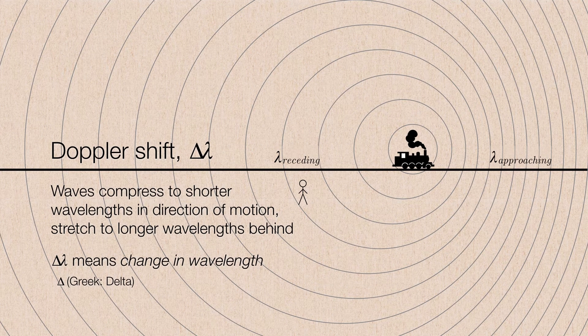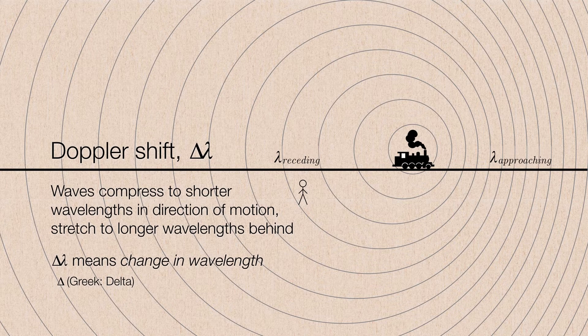And we express the Doppler shift by the Greek letter delta lambda, so it's delta lambda, change in wavelength. But this change in wavelength also applies to light from moving objects.